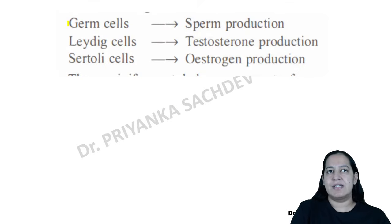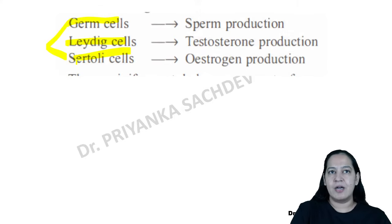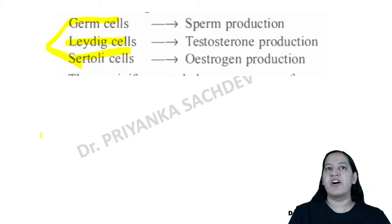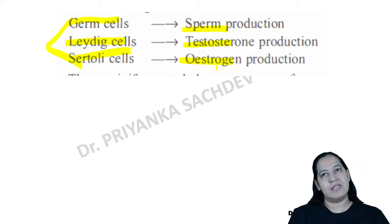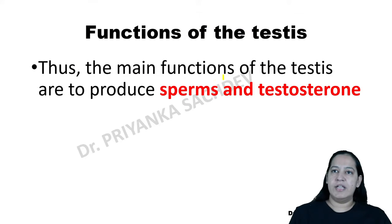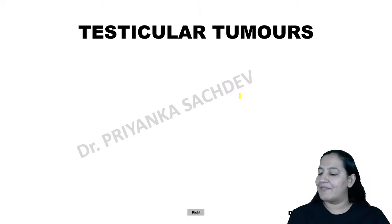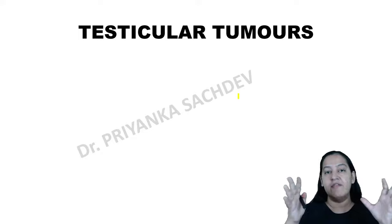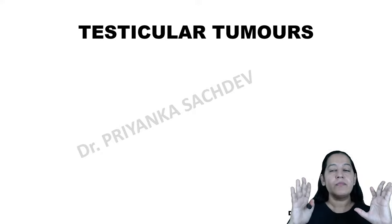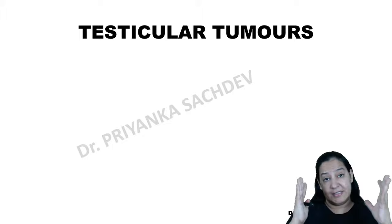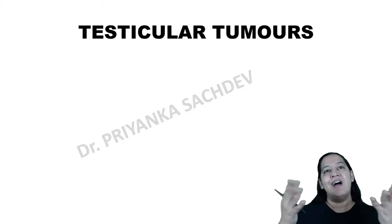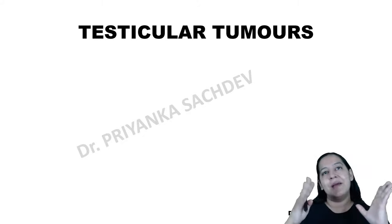In summary: the testis has three cell types — germ cells, Leydig cells, and Sertoli cells. Germ cells and Sertoli cells are in the seminiferous tubules; Leydig cells are in the stroma. Germ cells produce sperms; Leydig and Sertoli cells produce testosterone and estrogen. The two functions of the testis are sperm formation and testosterone formation.